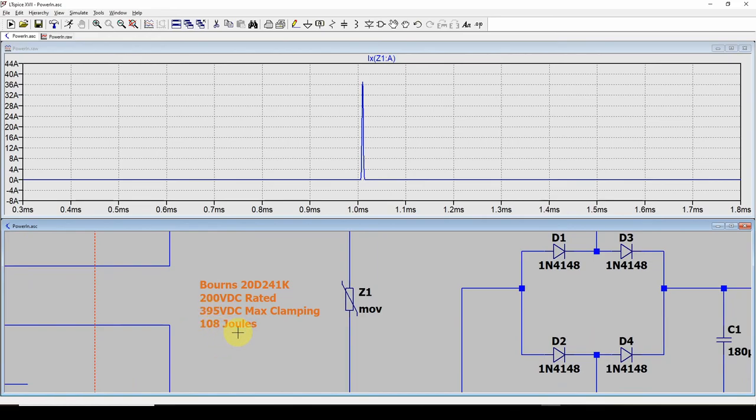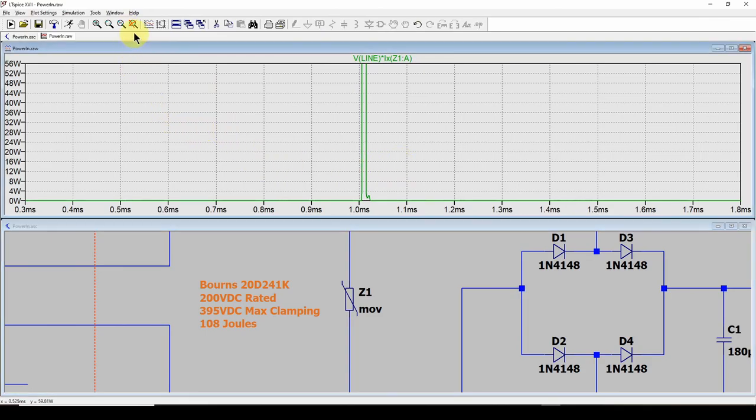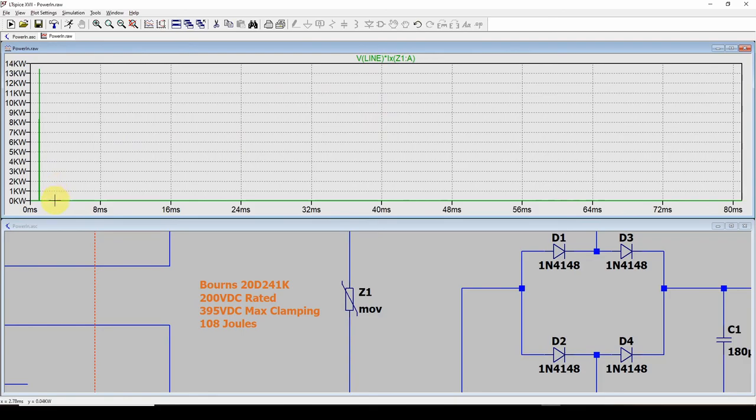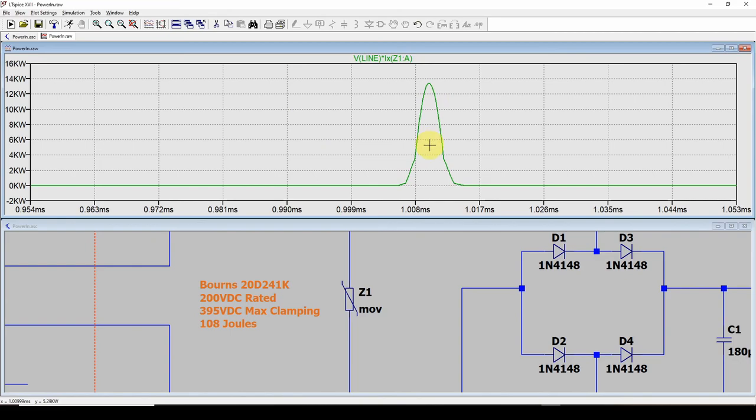Well, this can withstand 108 joules. So how do we find out what this can withstand? So if you hover over this and you hit the Alt key, it will tell you how many watts are dissipated. So let's get rid of this current. And here is the watts. Let's zoom out. So we got the watts dissipated in that MOV. So it comes up to, we were up to 13,500 kilowatts for, what is it, 30 microseconds. So here is the watts dissipated by this MOV. A lot of watts, but for a very short amount of time.